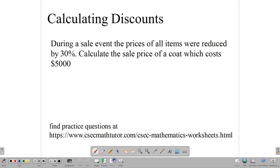Let's look at our final question. And our final question here says, during a sale event, the prices of all items were reduced by 30%. And so if they were reduced by 30%, calculate the sale price of a coat, which costs $5,000. So first, we need to find what 30% of $5,000 is. 30% is out of 100. So we write 30 over 100, multiplied by $5,000, which means that we can do a nice division here. Divide by 100, we get 50. So our answer would be 30, multiplied by 50, which gives us $1,500.